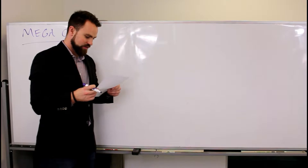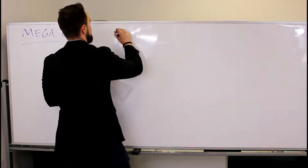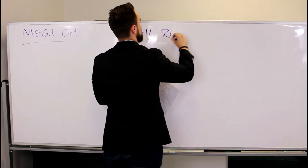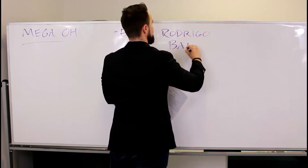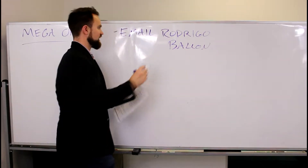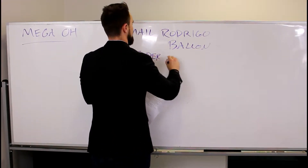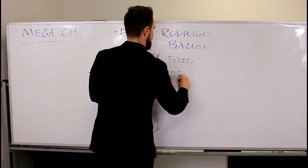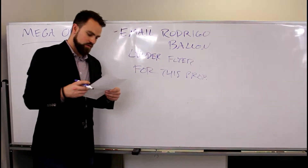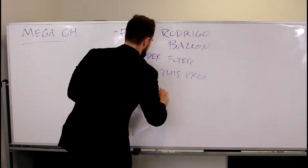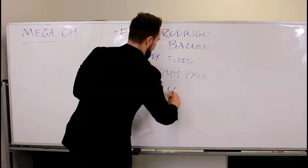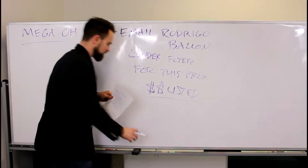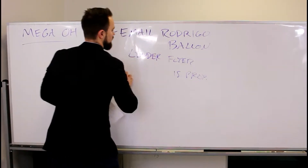Next on the list: email our preferred lender — Regal by Home — and his team to request a lender flyer for this property. Let them know what price the home is going to be listed at, or what range, so they can make an appropriate lender flyer.